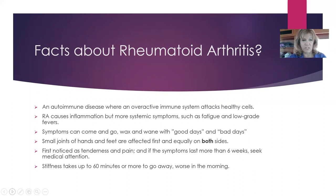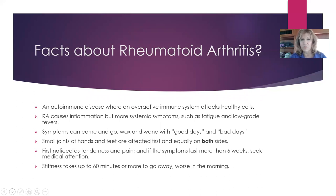Now let's go to rheumatoid arthritis — a totally different arthritis. There are other arthritis types too, like gouty arthritis and psoriatic arthritis. When you feel joint pain, it's good to see your general clinician, nurse practitioner, or PA for a good workup. Rheumatoid arthritis is an autoimmune disease, involving an overactive immune system that attacks healthy cells. People with diabetes type one, thyroid disease, and lupus are some examples of autoimmune conditions that attack healthy cells.